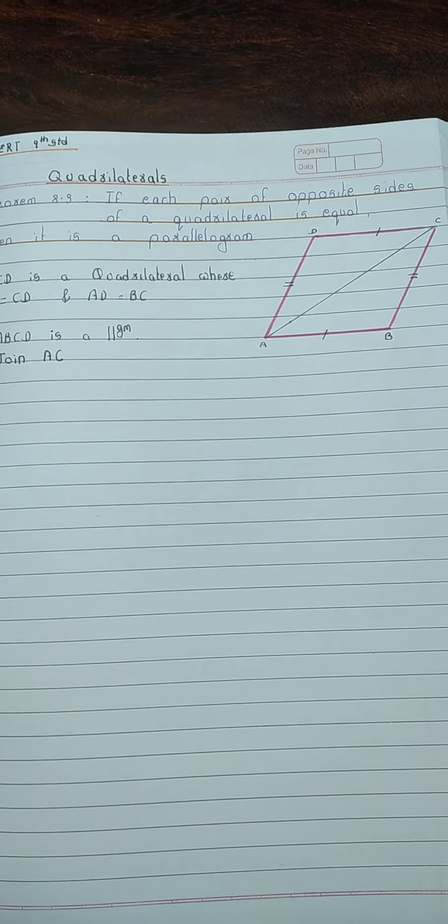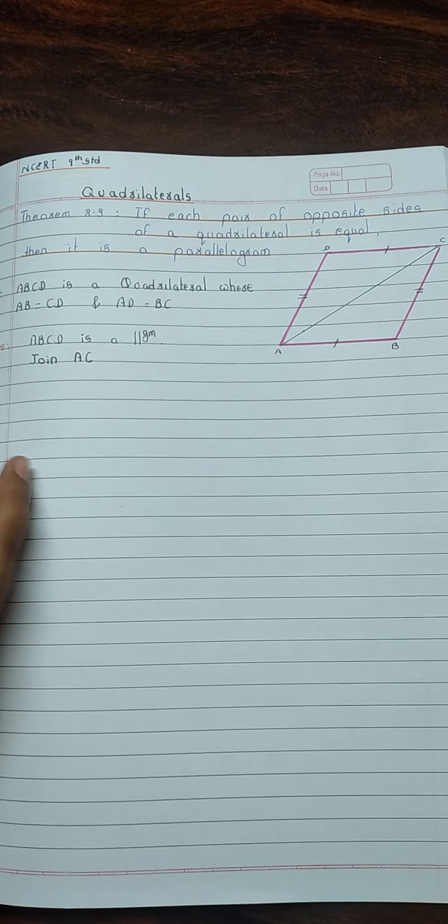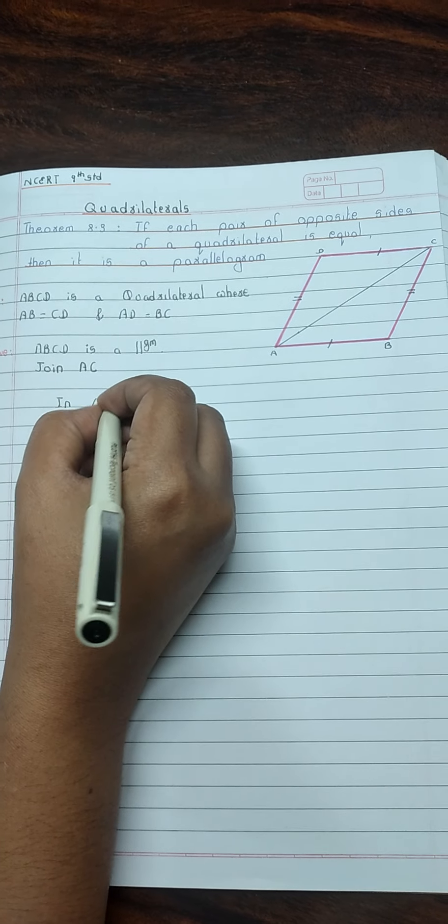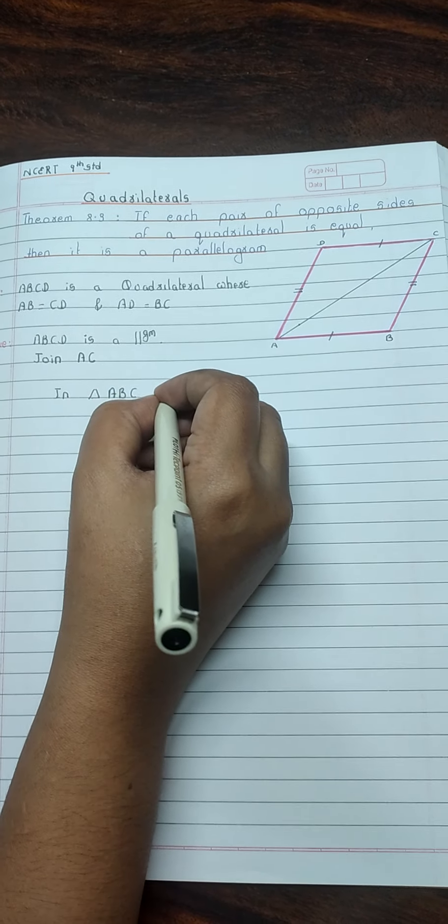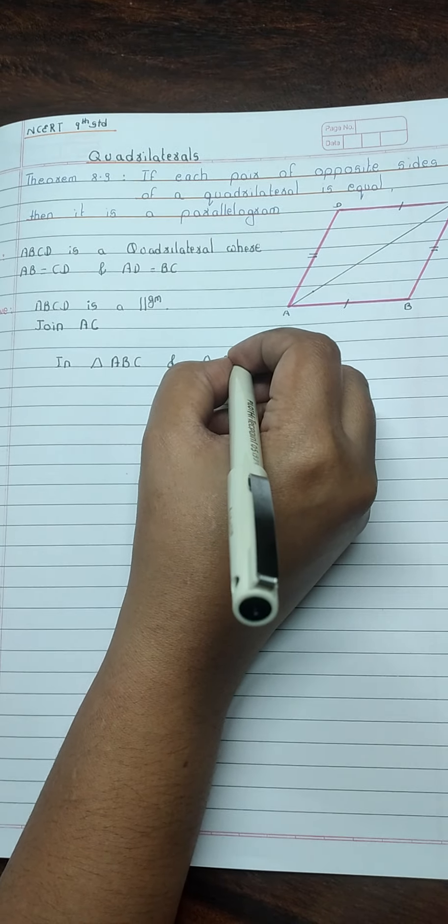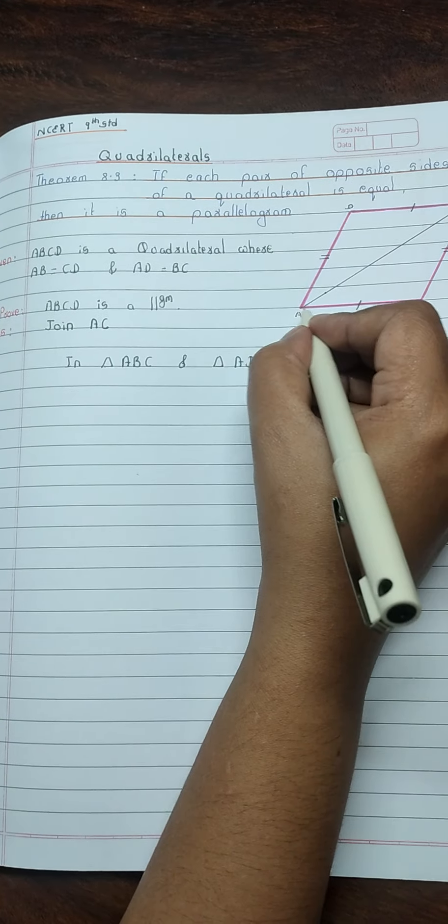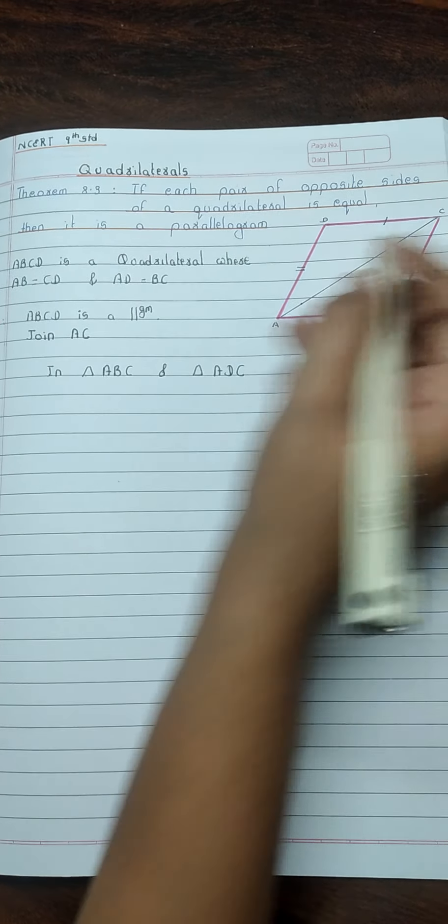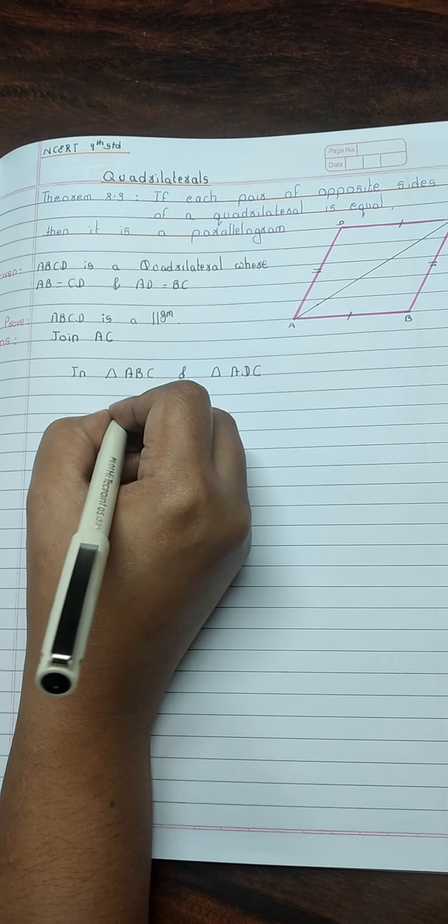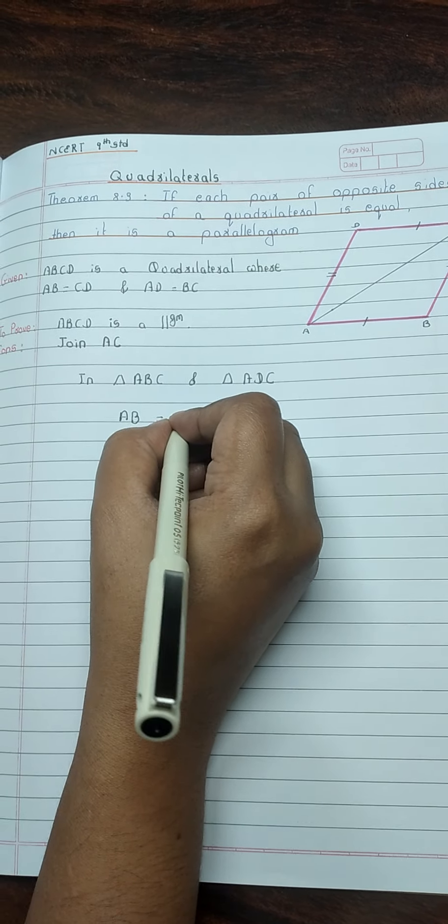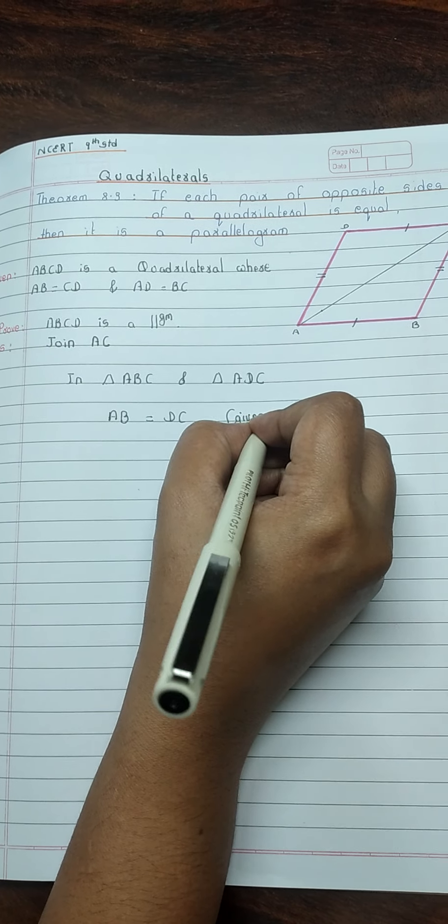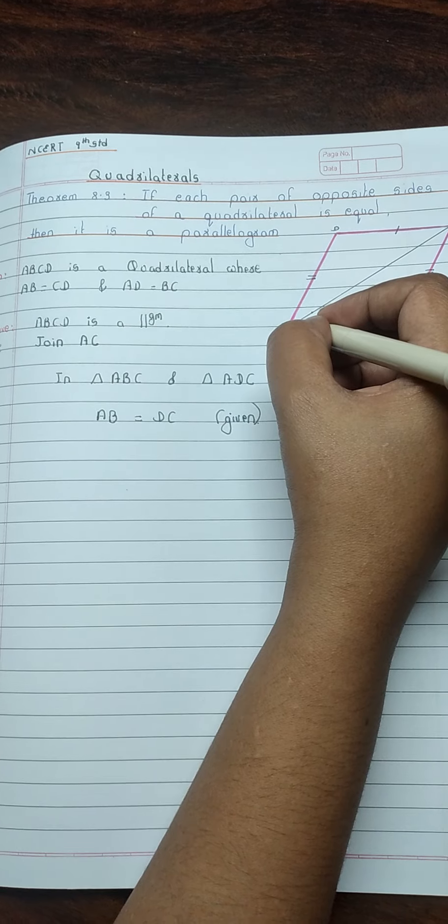In triangle ABC and triangle ADC. AB equal to BC given.